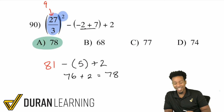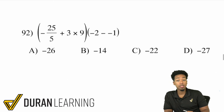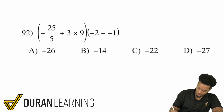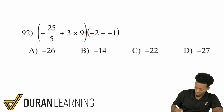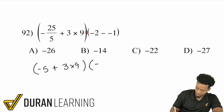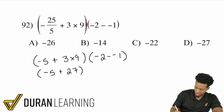That was about nine examples. At the end of the day, what's most important is the ability to look at what's going on and make the right decisions. Next problem: we have two groups with multiplication between them, so we take care of each group individually then multiply the results. On the left: negative 25 over 5 — 25 divided by 5 is 5, so that's negative 5. Then we have 3 times 9, which is 27.